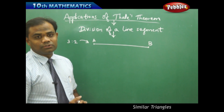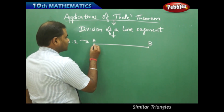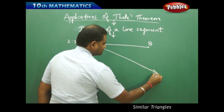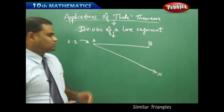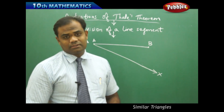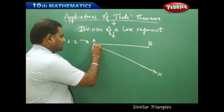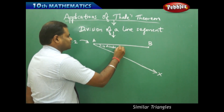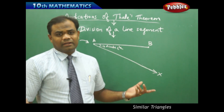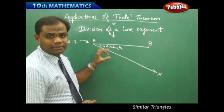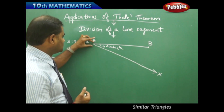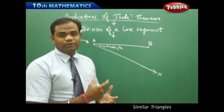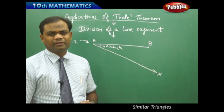For this, initially I'm going to draw a ray AX making an angle with the line segment at some suitable angle. This angle must be acute. You can have any angle — 30 degrees, 60 degrees, 45 degrees — which are standard angles, and with a protractor you can draw the ray passing through that. There is no specification that I need to use only one fixed angle, but it can be any acute angle.